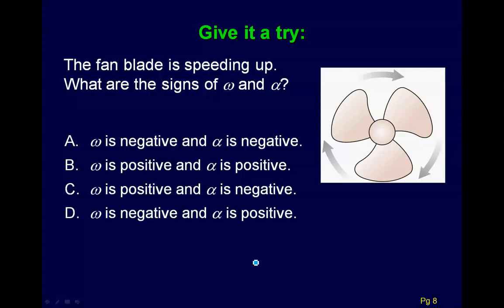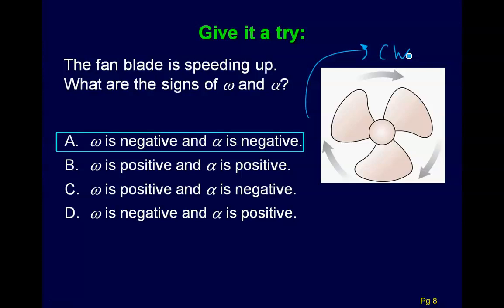Just a little refresher: here we have a fan blade rotating in the clockwise direction. What are the signs of omega and alpha, assuming the fan blade is speeding up? Hopefully you got that they're both negative. Clockwise is the negative direction, so since it's rotating clockwise, omega is negative. It's speeding up, which means the acceleration is in the same direction as the angular velocity, so alpha is negative as well.